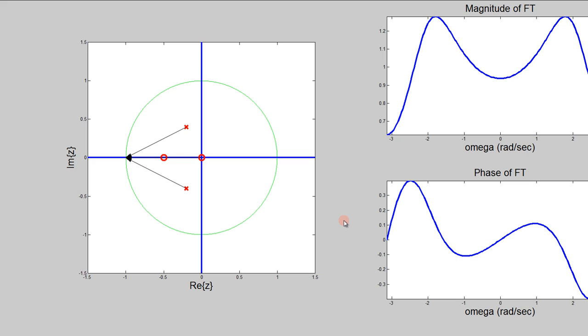You can see that we've only plotted between negative pi and pi in frequency, because the whole function is going to be 2 pi periodic. So all together, we have seen how to evaluate the discrete time Fourier transform from the z-transform, as well as the physical meaning of this operation.